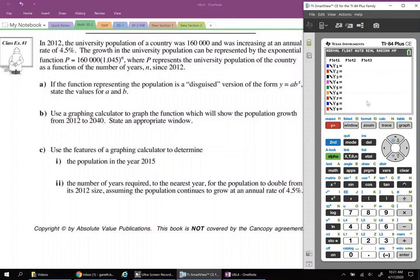In 2012, the university population of a country was 160,000 and was increasing at an annual rate of 4.5%. The growth in the university population can be represented by the exponential function p equals 160,000 multiplied by 1.045 raised to the power of n, where p represents the university population of the country as a function of the number of years n since 2012. So lots of information there. Something that I really want to highlight is just really understand your variables. P is going to be the population of a country since 2012. So n is the number of years since 2012.